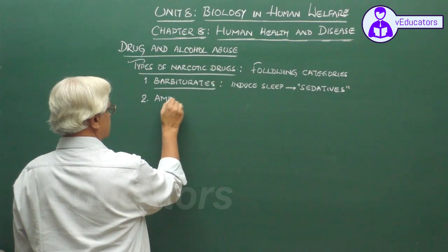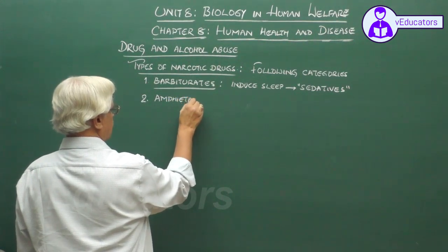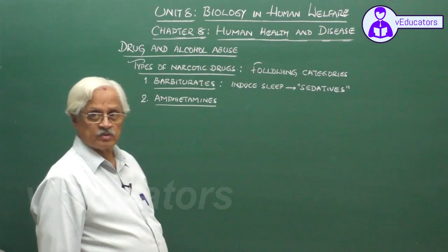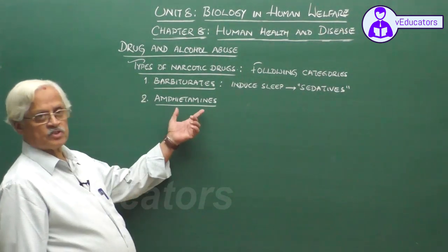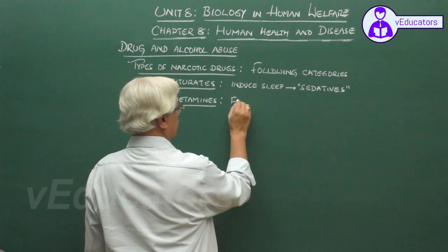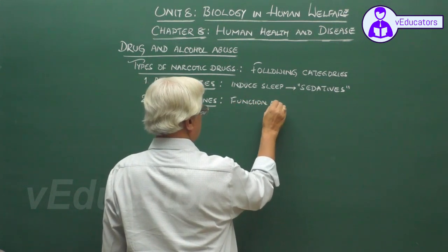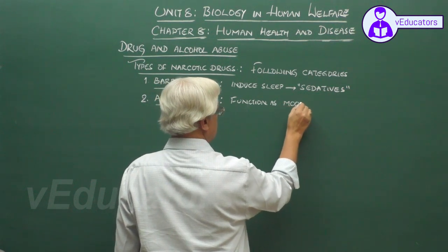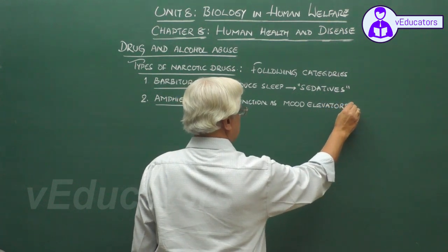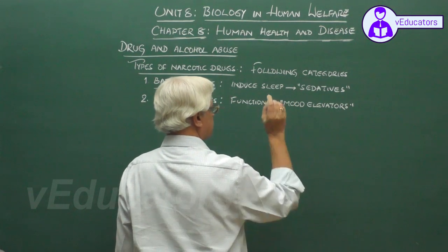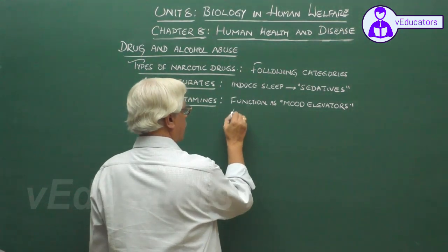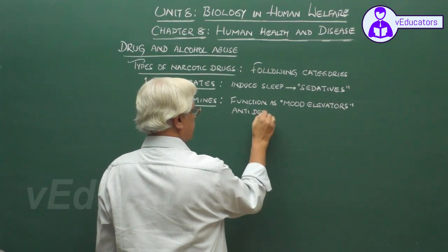Then we have another class of chemical substances — derivatives of amines. They are called amphetamines. These are drugs that function as mood elevators. Mood elevators are antidepressants.